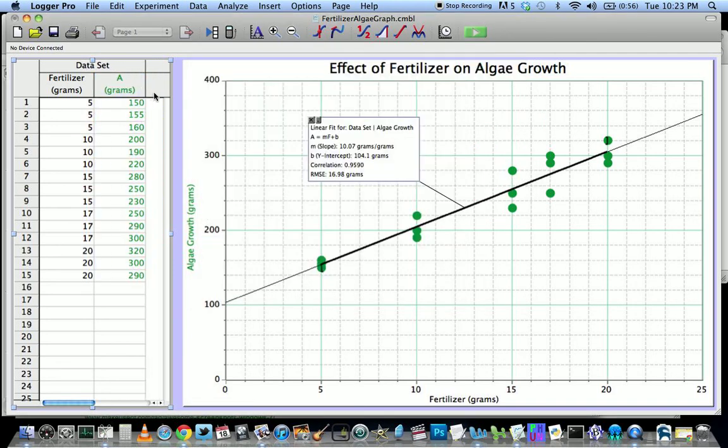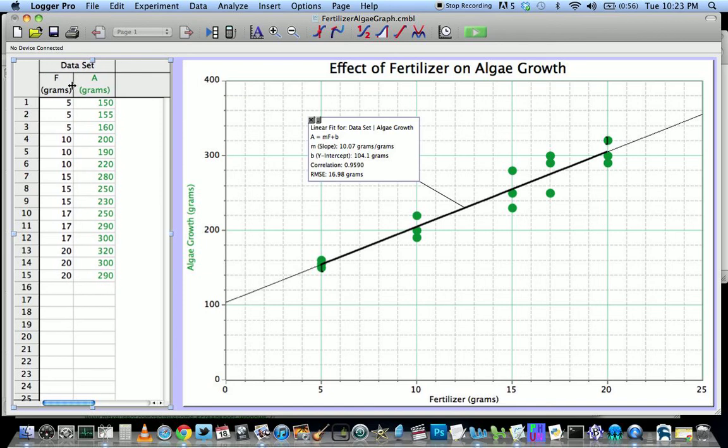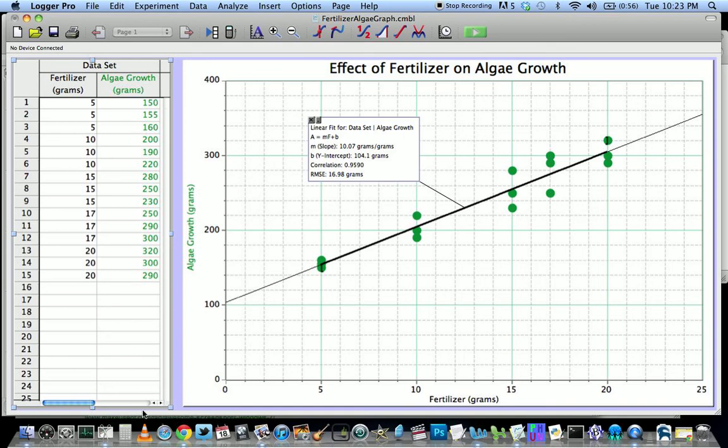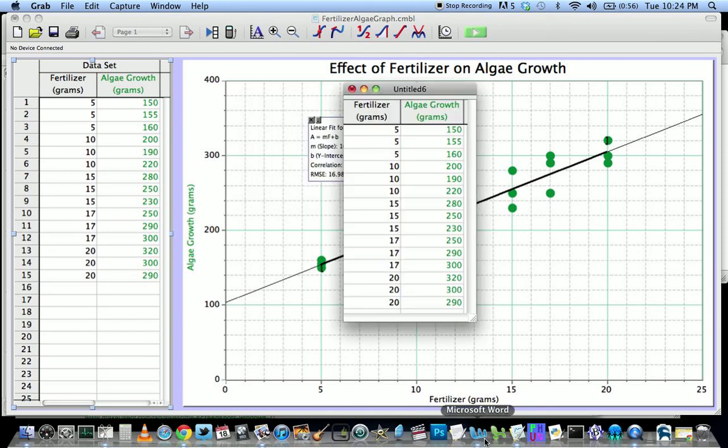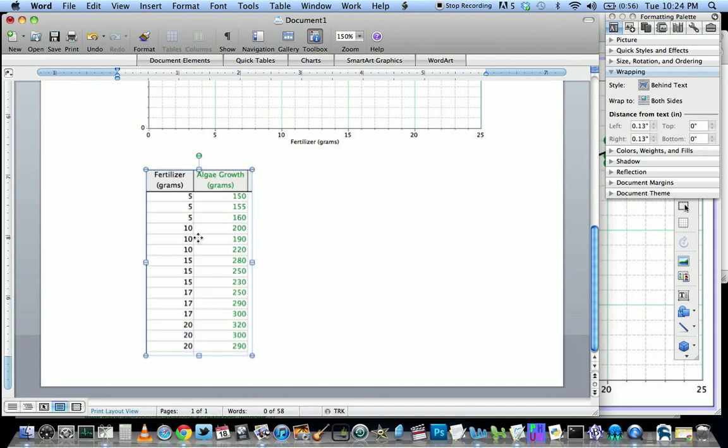If these columns are too small, then what should say algae growth turns into an A or what should say fertilizer turns into an F. And we really would like to have all of this information and the units exactly correct. So when you get this right, you can take a screenshot again. In this operating system, it's a program called Grab and I could grab this and then I go to the Microsoft Word program and I paste it in there.